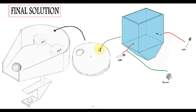A ball is released onto this surface of the disc and falls through the hole and into the compartment here. The wheels then catch the ball and eject it out.